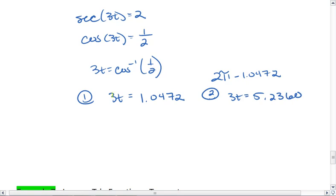I'm not done yet, because I still have this 3 here. So this is a little different than the problems we've looked at before, but not by too much. It's just one more step. And now I want to divide both sides by 3. So I get 1.0472 divided by 3, this gives me 0.3491, or 5.2360 divided by 3, and that gives me 1.7453.